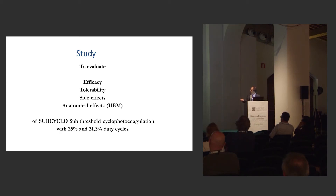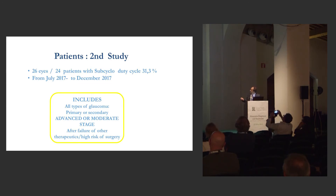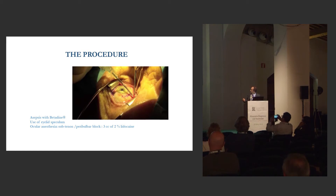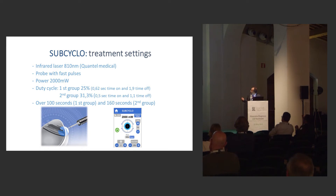We compared the 25% and 31.3% duty cycle procedures. The first group had 48 eyes with a duty cycle at 25%, including all types of glaucoma — both primary and secondary — as this was a first study. The second group had 26 eyes at 31.3%. The procedure is quite easy: you perform asepsis as with the standard diode laser, use an eyelid speculum, and administer sub-Tenon or peribulbar block anesthesia — I now use sub-Tenon anesthesia.